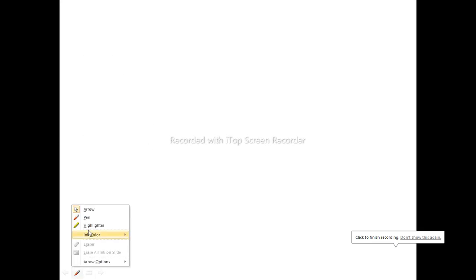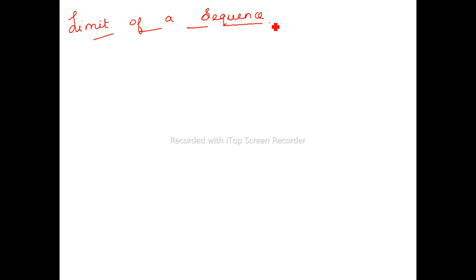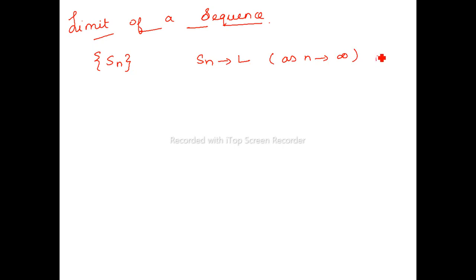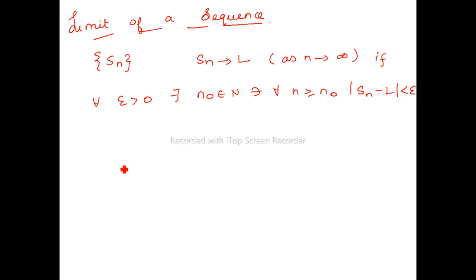Good morning friends. Today we are going to discuss the limit of a sequence. The definition is: let SN be a sequence of real numbers. SN approaches L as n tends to infinity if for every epsilon positive, there exists a stage n0 belonging to the natural numbers such that for every n greater than or equal to n0, the distance between SN and L is less than epsilon. This is the limit of a sequence.